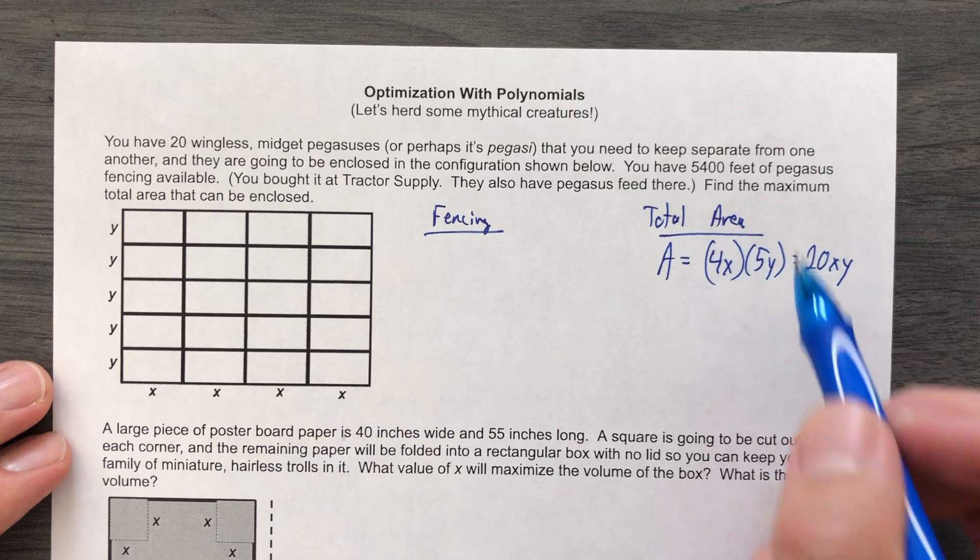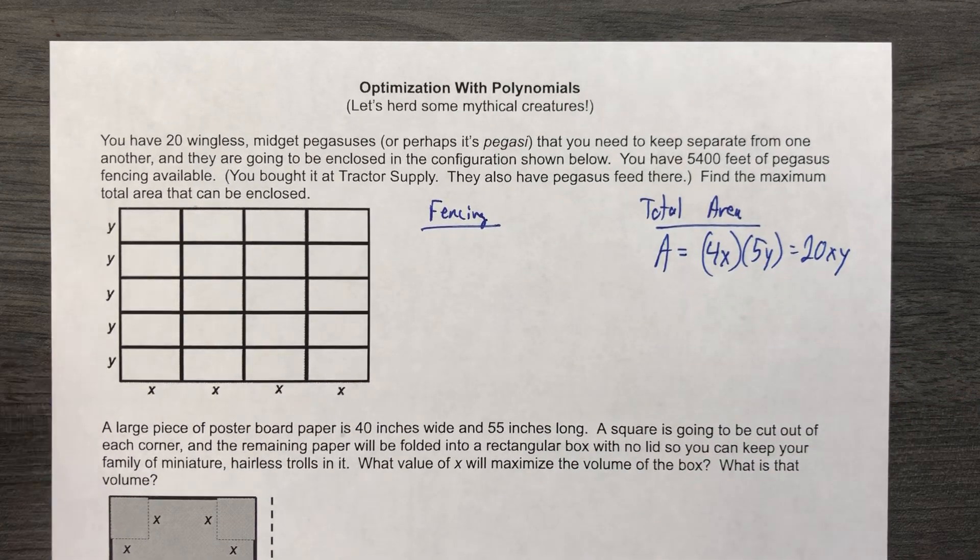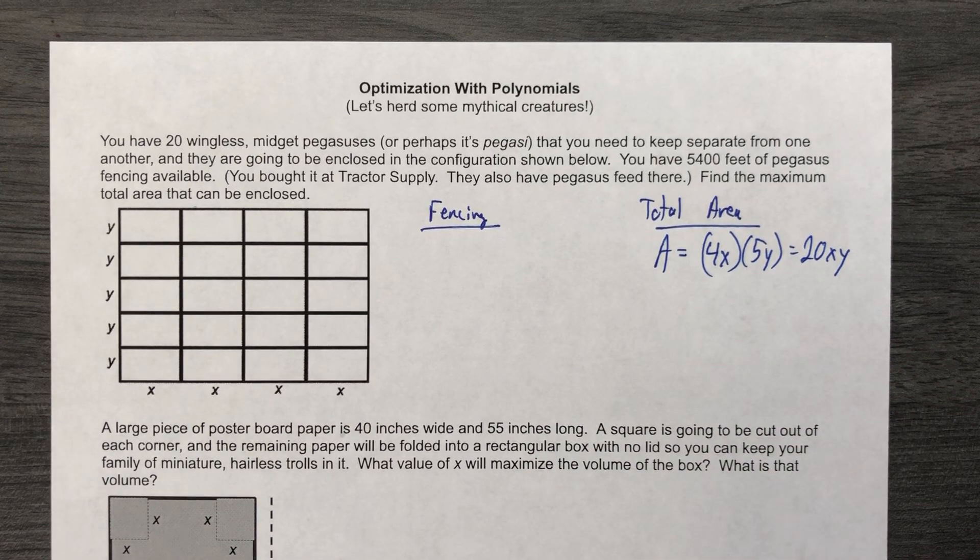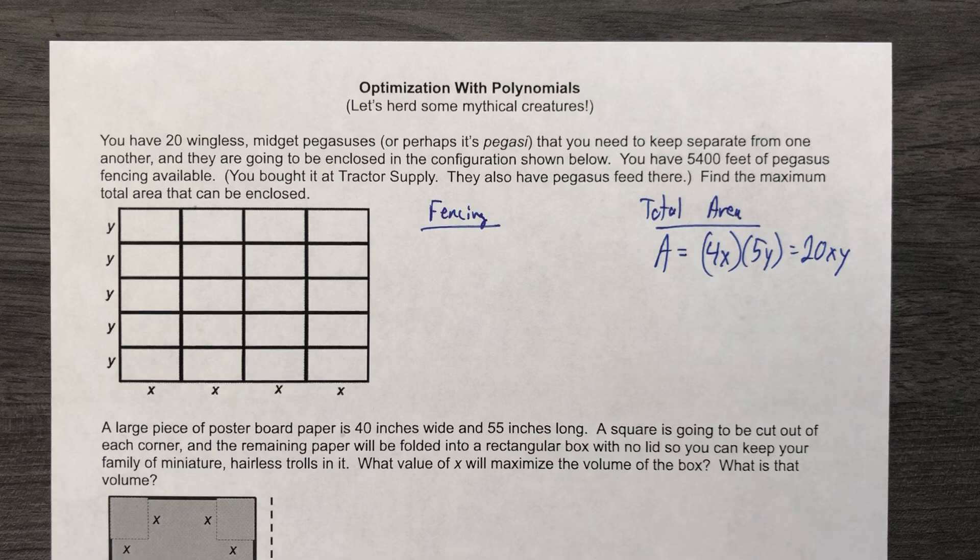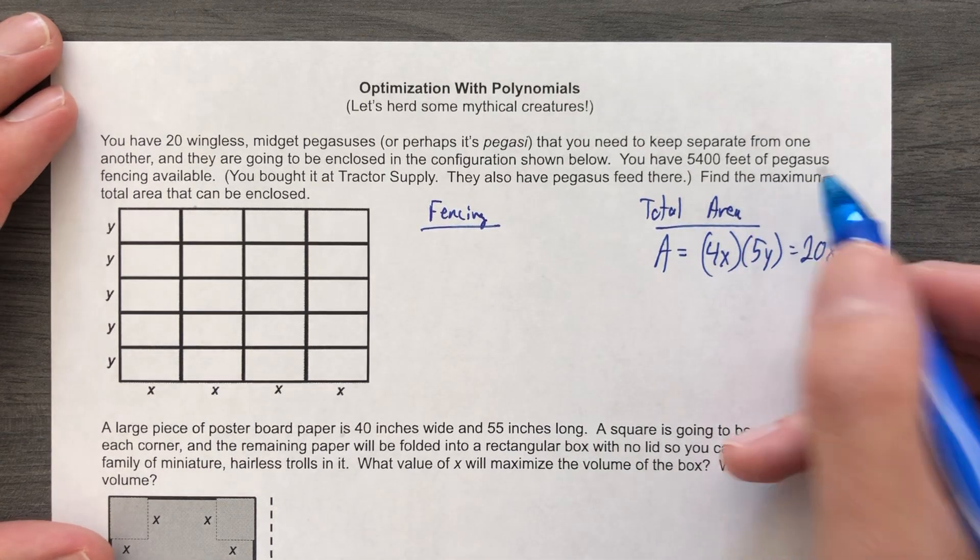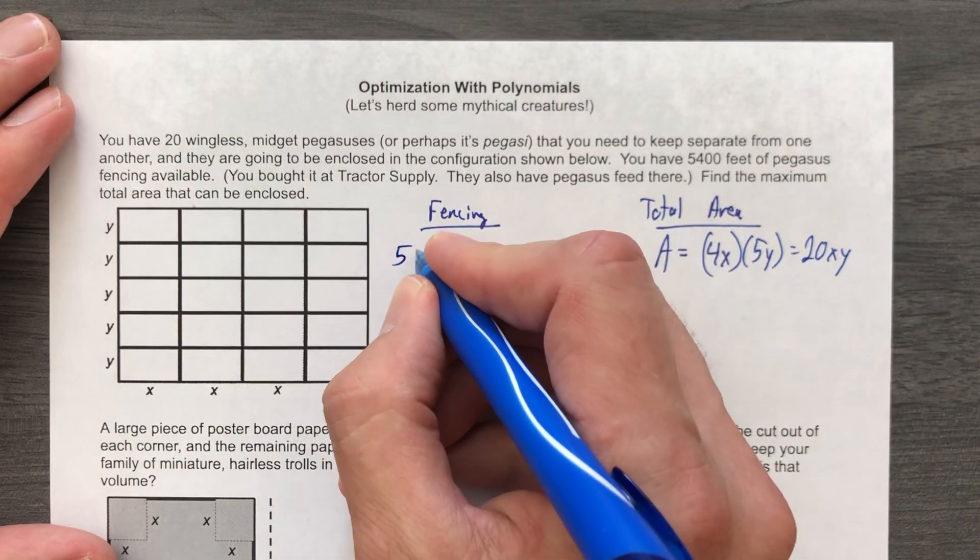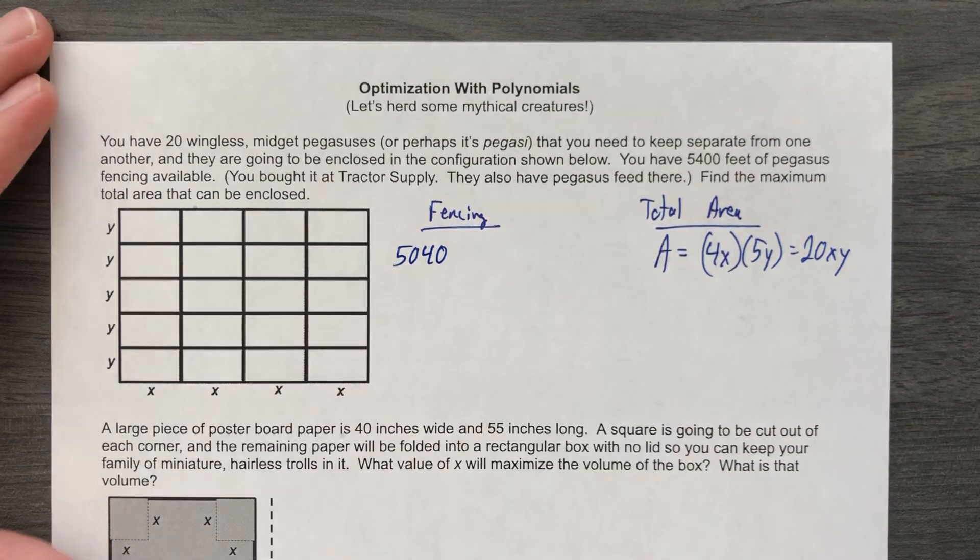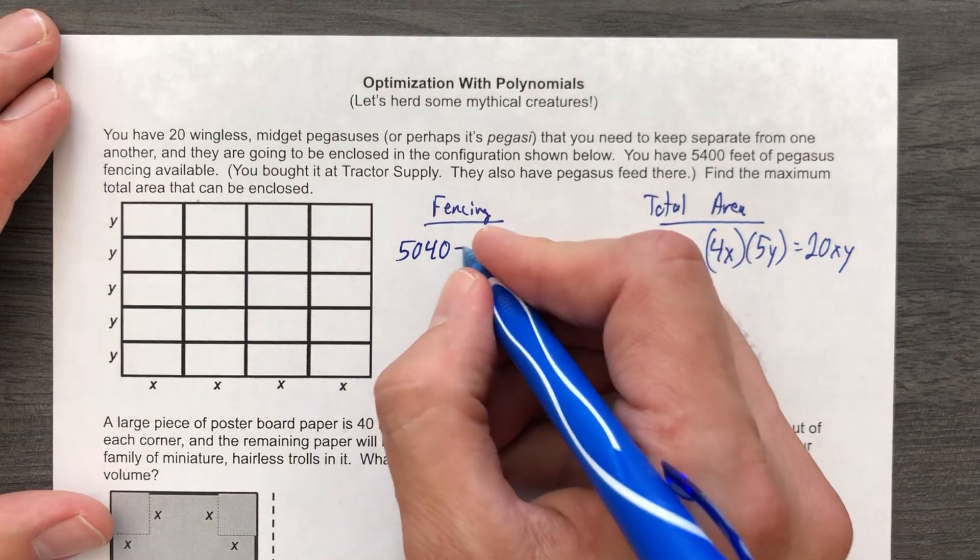I want to know that area that would give me that. I don't know what it is. Oh well. I'm gonna have to jump back to what I do know. I do know how many feet of Pegasus fencing there are. There's 5,040. Well, how is it split up? I'm glad you asked.